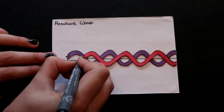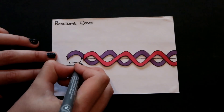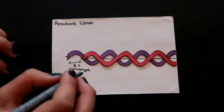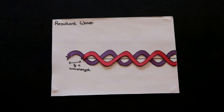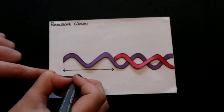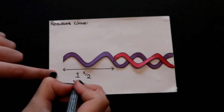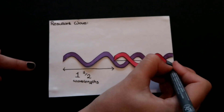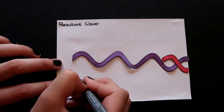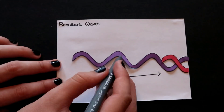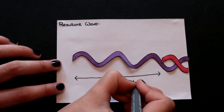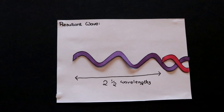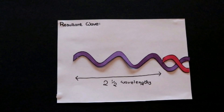Similarly, for destructive interference, we saw that it occurred when the start of the second wave was shifted by half a wavelength. But if we shift the start of the second wave by one and a half wavelengths, so that the first wave has travelled one and a half wavelengths further than the second, we can see that the waves still cancel each other out and we're still getting destructive interference. And the same thing would happen with a path difference of two and a half wavelengths, and of three and a half wavelengths, and so on. In general, if one wave has travelled a whole number plus a half wavelengths further than the other, we end up with destructive interference.